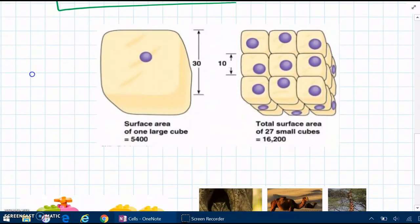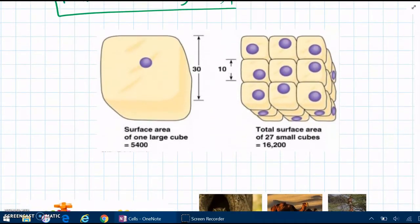The next question to ask though is, why are cells so small? Why isn't a big animal, like a human, why aren't we just made of one cell?